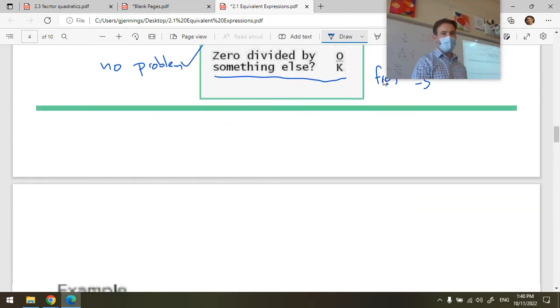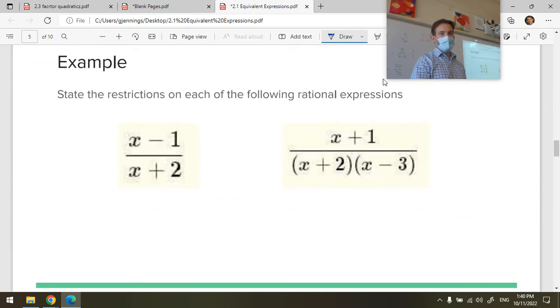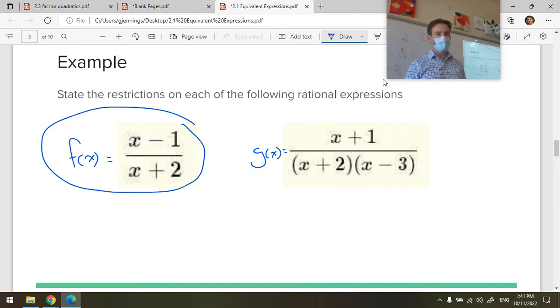Okay, let's keep going. Let's take a look at this example. Let's talk about the restrictions on these rational expressions here. There is a value for x. If I call this f of x and this one g of x, what is x not allowed to be in f of x? X is not allowed to be negative 2 because that would create a 0 in the numerator. Not allowed.